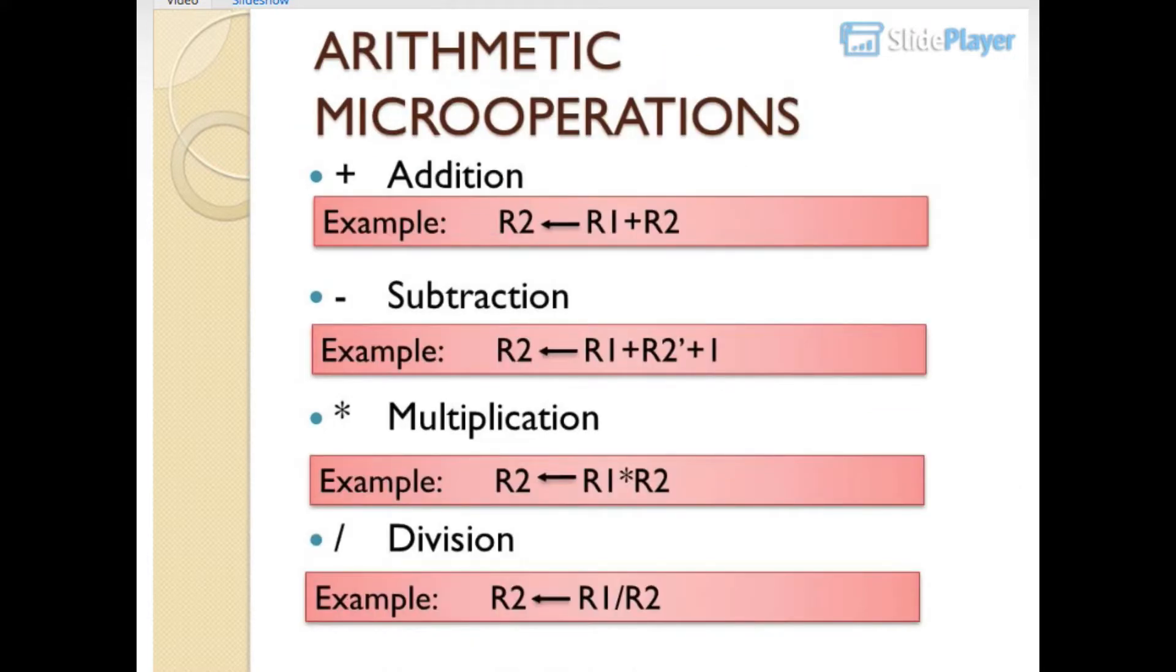Arithmetic micro operations: plus for addition, minus for subtraction, times for multiplication, slash for division. Examples: R2 gets R1 plus R2. R2 gets R1 plus R2 plus 1. R2 gets R1 times R2. R2 gets R1 slash R2.